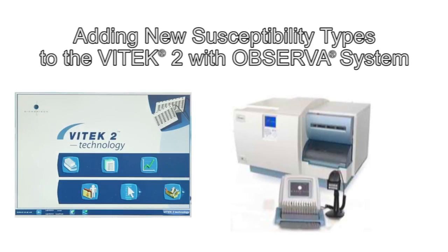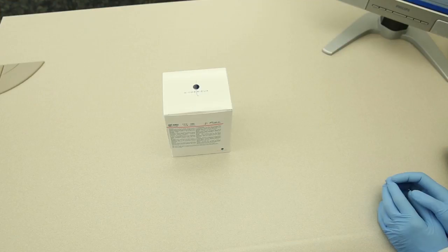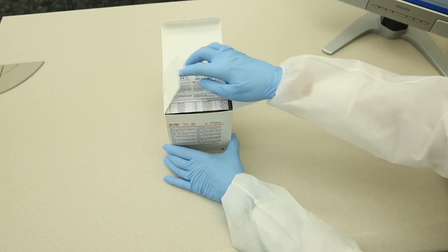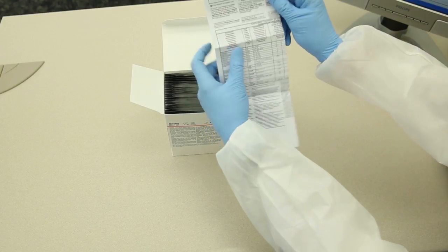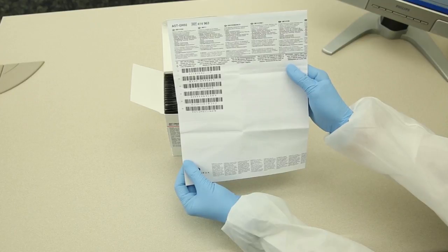The purpose of this video is to demonstrate the steps required to add a new antimicrobial susceptibility test card to the Vitec-2 with Observa system. At the end of this video you should be able to add a new AST card to the Vitec-2 software, add a new AST card to the Smart Carrier Station, and add a new AST card to the Observa software. Make sure you have a copy of the new Vitec-2 susceptibility test card package insert found in the test kit box or in the technical library at mybiomerieux.com.